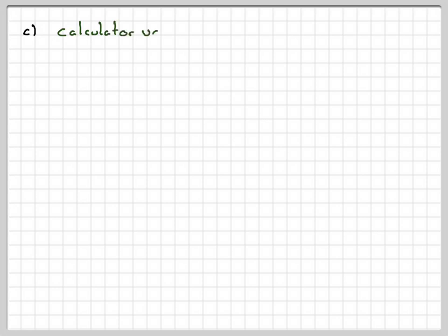Now the calculator value of 0.99 to the power of 5 is 0.9509900499.